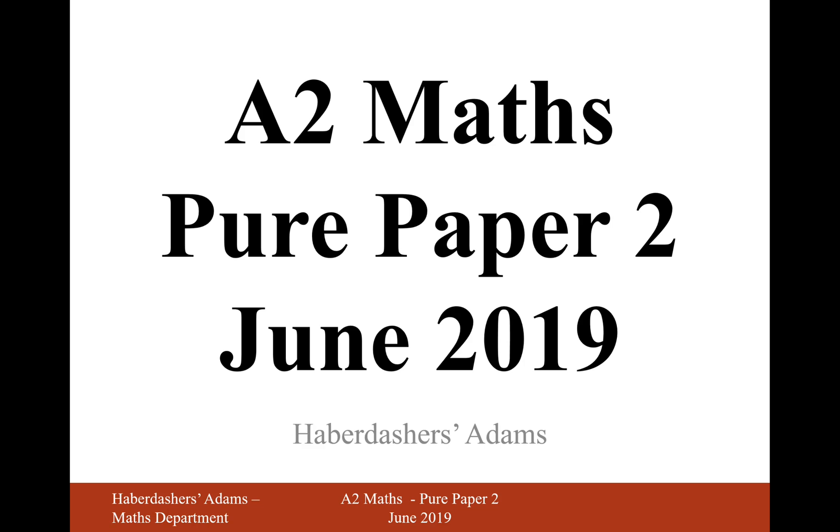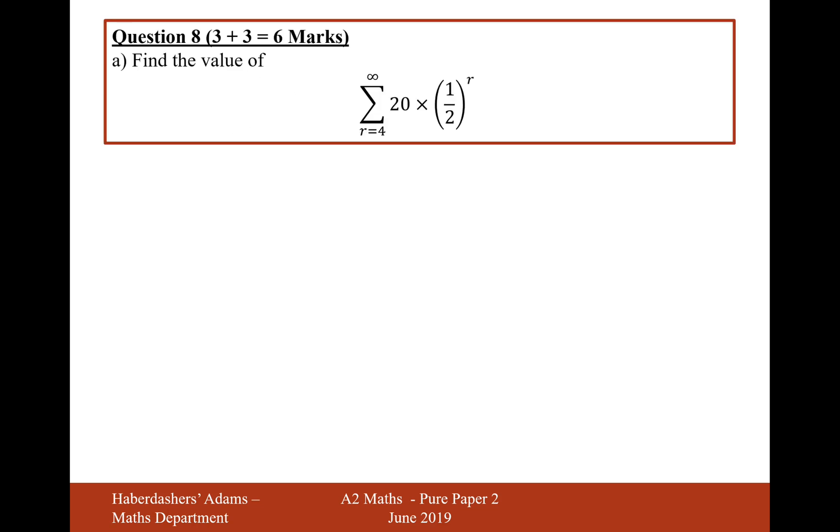Hello there, welcome to the June 2019 paper, Paper 2, looking at question 8. Part A is find the value of the summation from 4 to infinity of 20 times a half to the power of r.